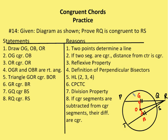Now I'm going to say that triangles GOR and BOR are congruent by the HL postulate. I can then say that GR — the leg of the right triangle — is congruent to BR by CPCTC. So I've proven that the two triangles are congruent, and therefore GR is congruent to BR.